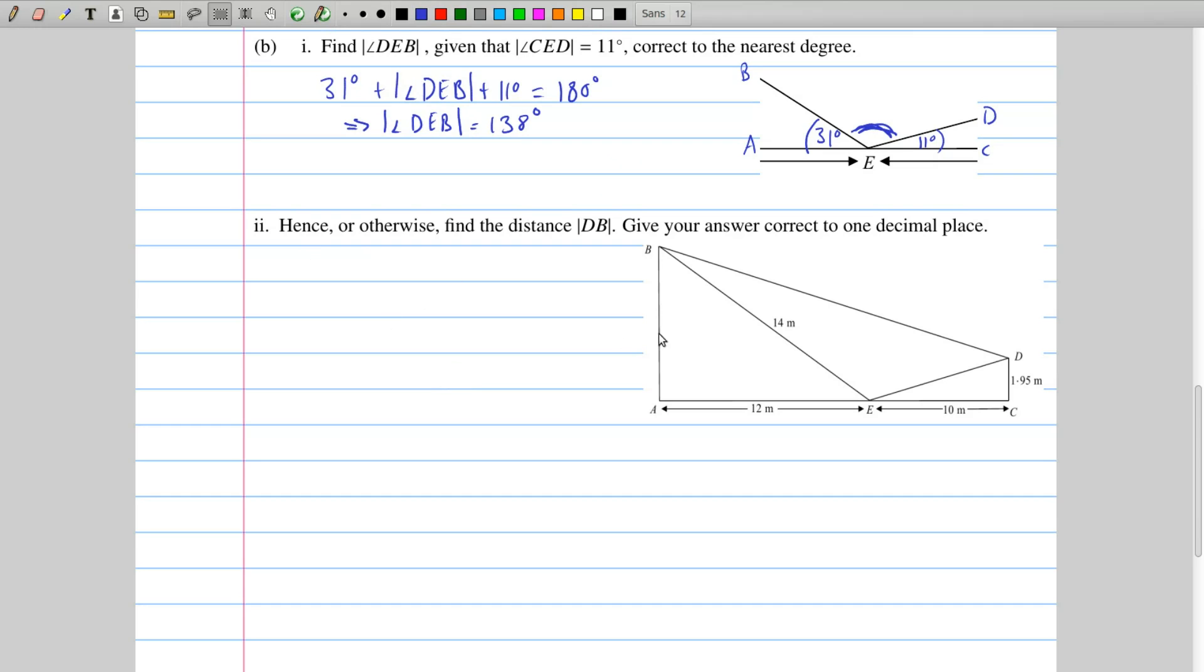With that information then, we're asked to find this length DB, that is the length of the zipline itself. When we fill in this information on our diagram, we know that this angle is 138 degrees. We also worked out that the length ED was 10.2 meters, and now we have all the information we need to find BD.